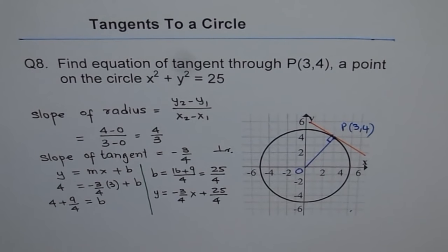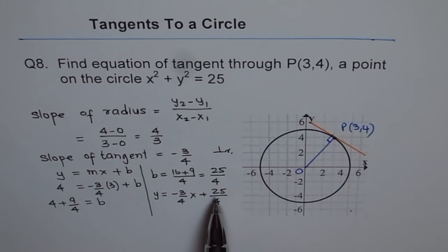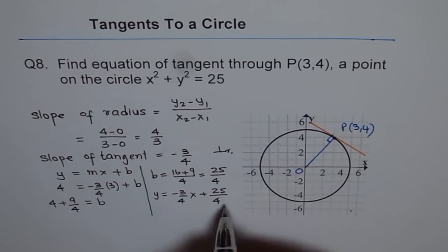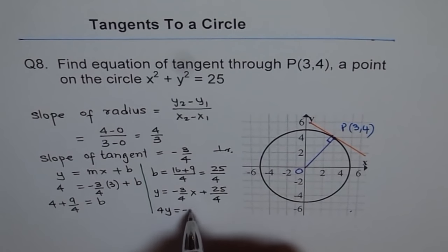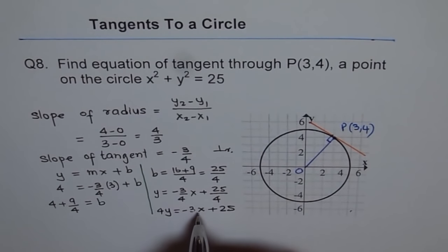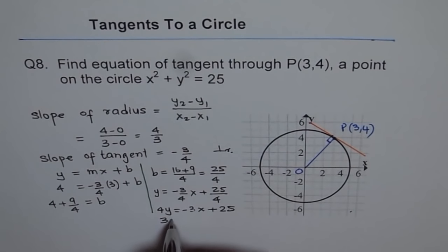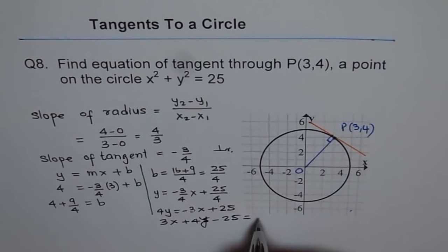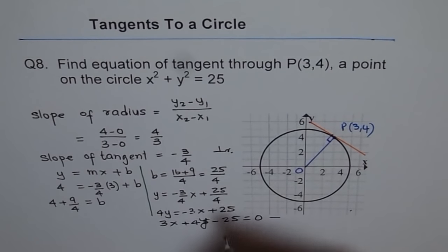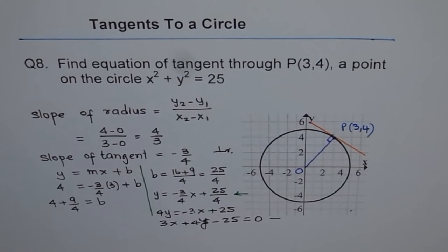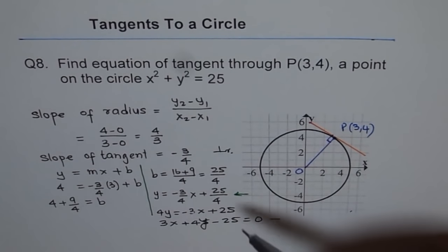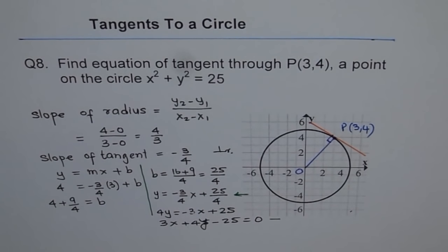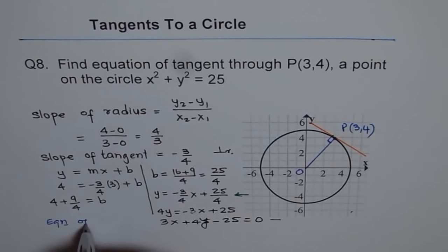If you want to write this equation in standard form, multiply both sides by 4: 4y = -3x + 25. Bringing all terms to one side gives the equation 3x + 4y - 25 = 0. Either equation is acceptable depending on which form you want — this is the slope-intercept form and the other is the standard form for the equation of the tangent.